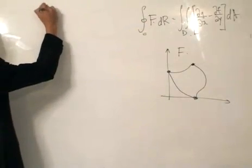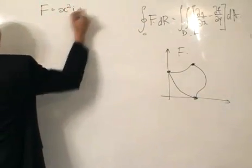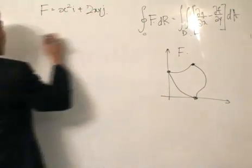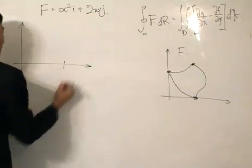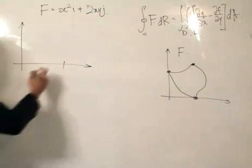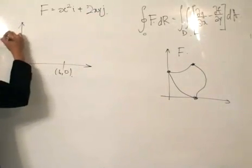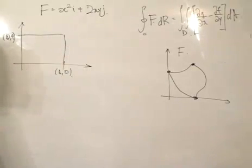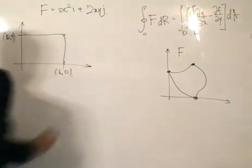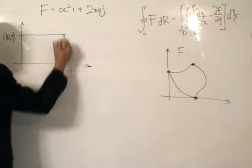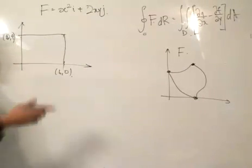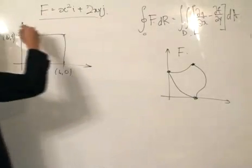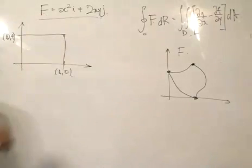Let's give a simple example. So f equals x² i plus 2xy j, and we're given a graph, but I'm going to simplify the mathematics a bit by saying it's a rectangle. If you study thermodynamics, you might get this as the work done or the power produced by a certain engine. What we can see is that this is a closed loop — it's piecewise smooth and positively oriented. We want to find the line integral of function f over this closed loop.